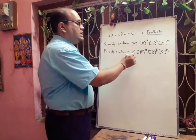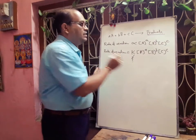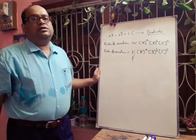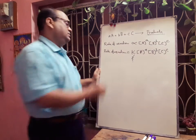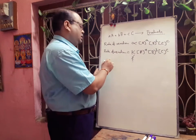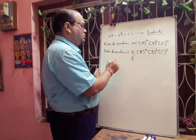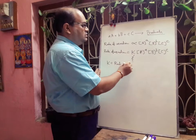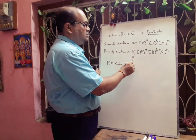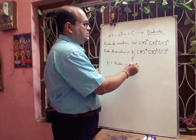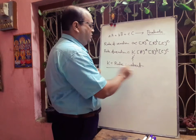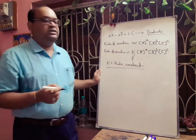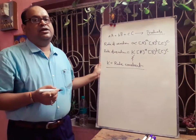Now what is this K? K is called the rate constant of this reaction. It is the proportionality constant in the rate expression.